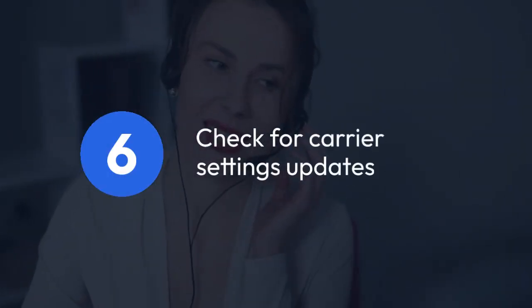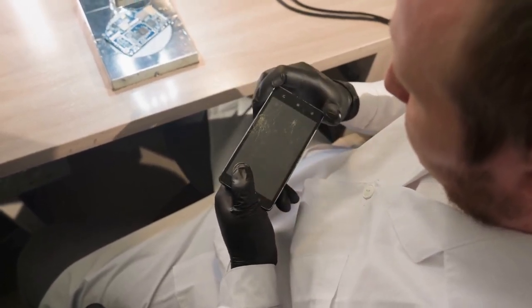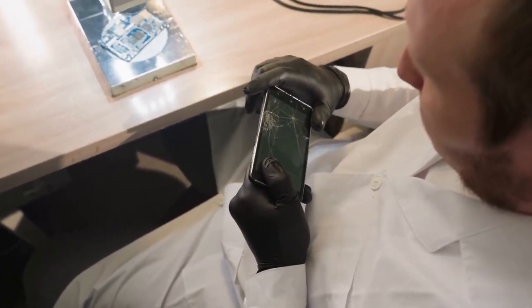6. Check for carrier settings updates. Some carriers provide automatic updates for their SIM toolkit settings. Go to your phone's settings and look for options like carrier settings update, network operator or similar. Check if there are updates available and download and install them.